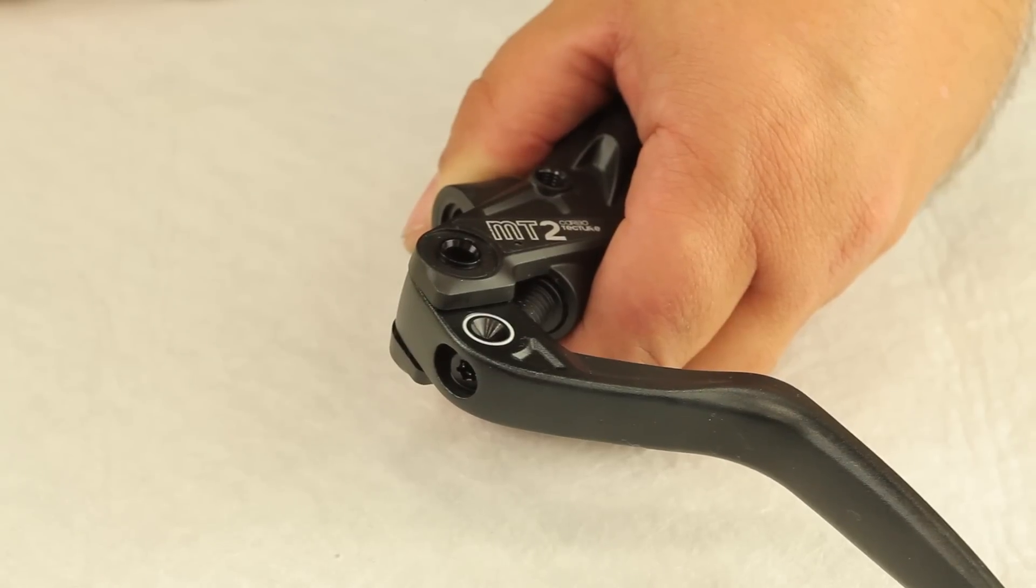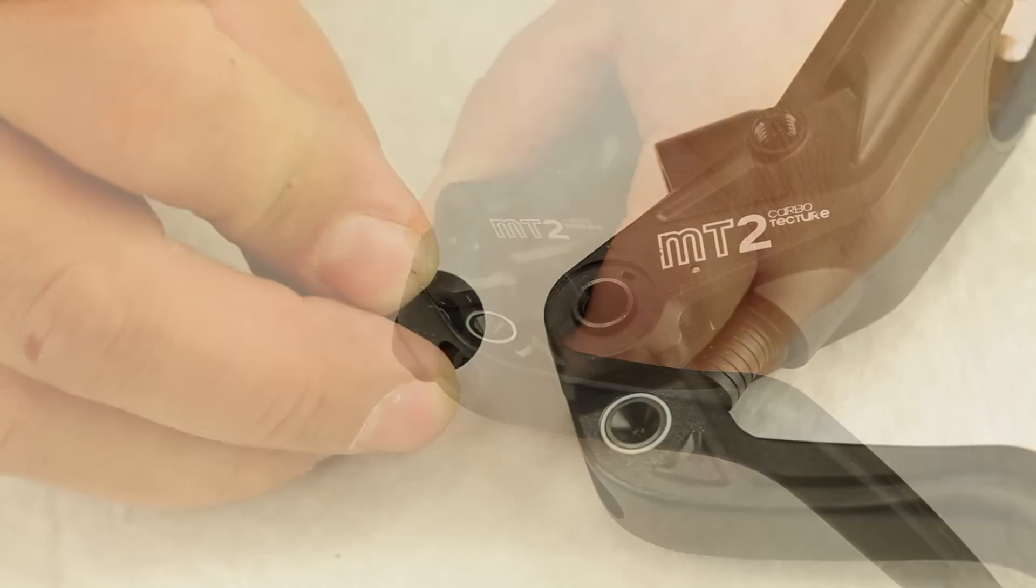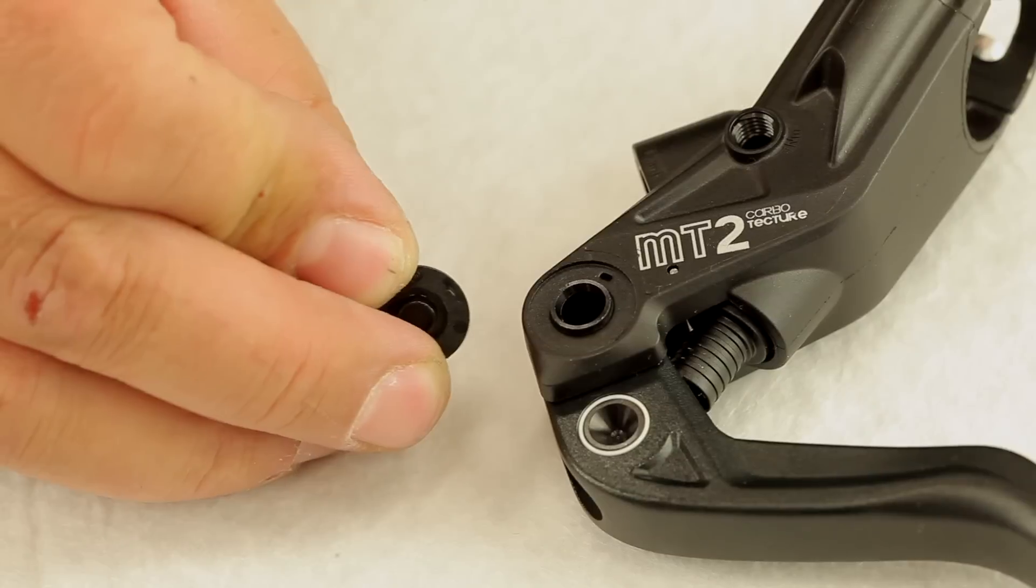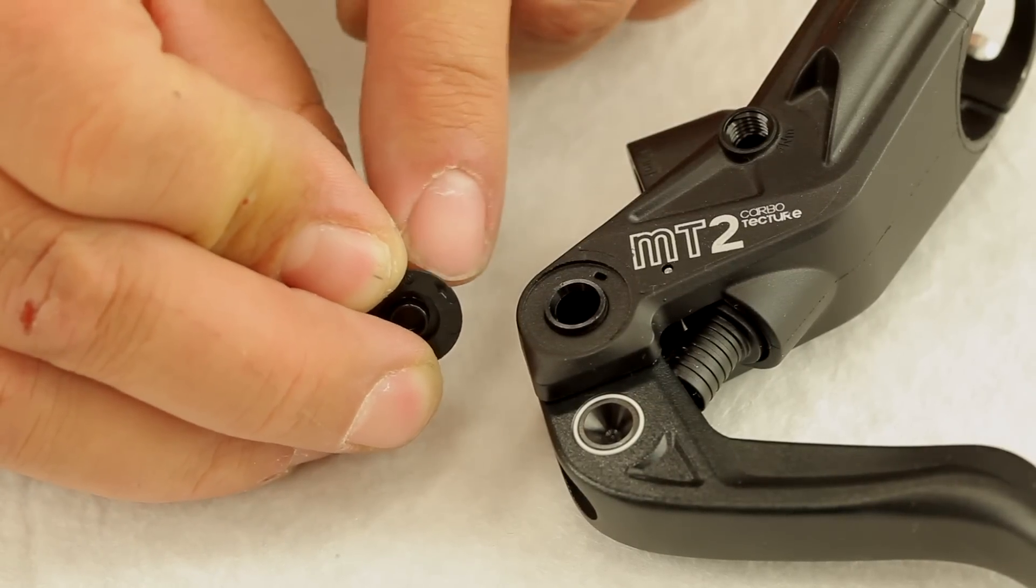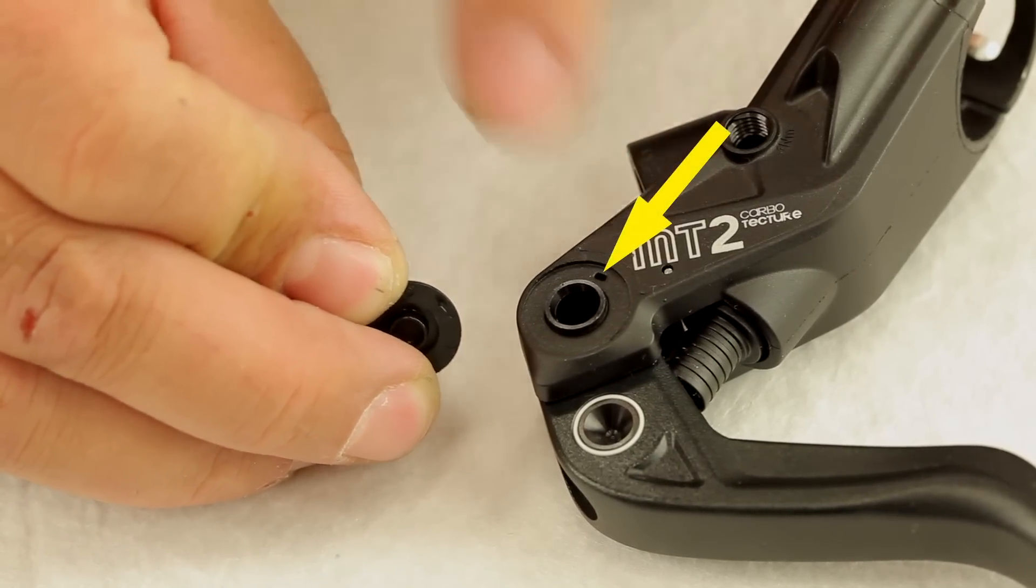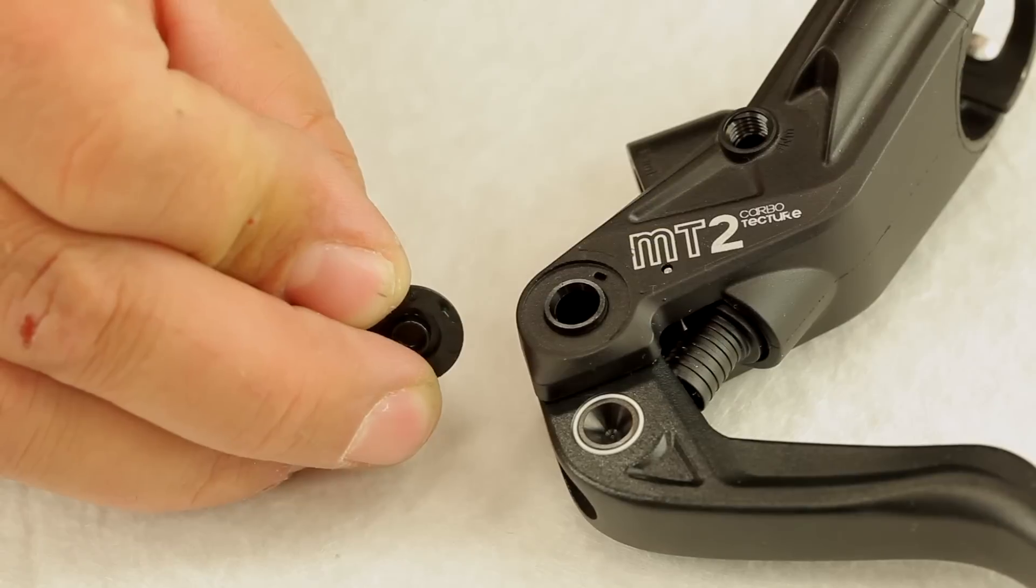Now proceed with the lever change as shown before. Ensure that when remounting new cover plates the small nose fits into the corresponding hole in the master housing. This creates a proper fit and orientation for the cover.